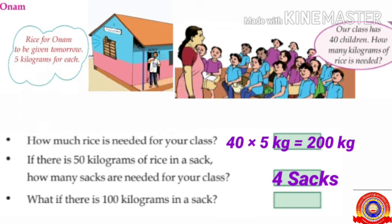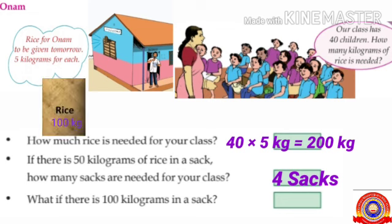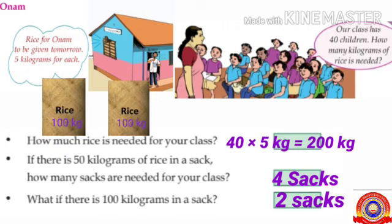Children, listen to the next question. What if there is 100 kilograms in a sack? That means, if there is 100 kilograms of rice in a sack, how many sacks are needed for 200 kilograms of rice? Yes, two sacks.